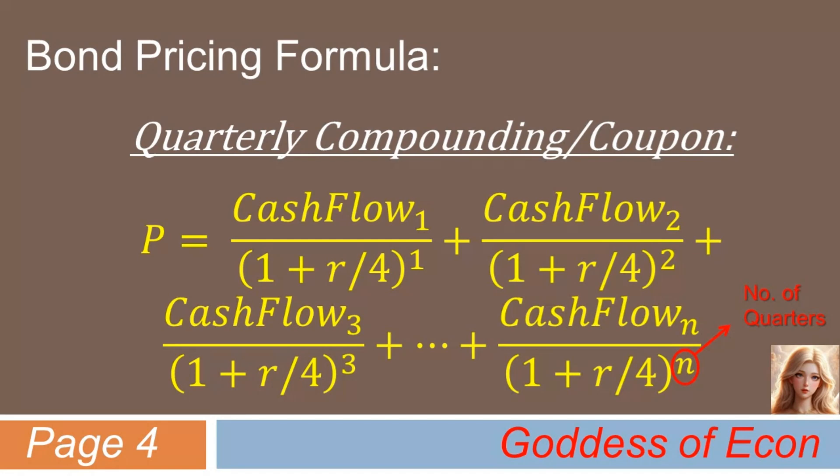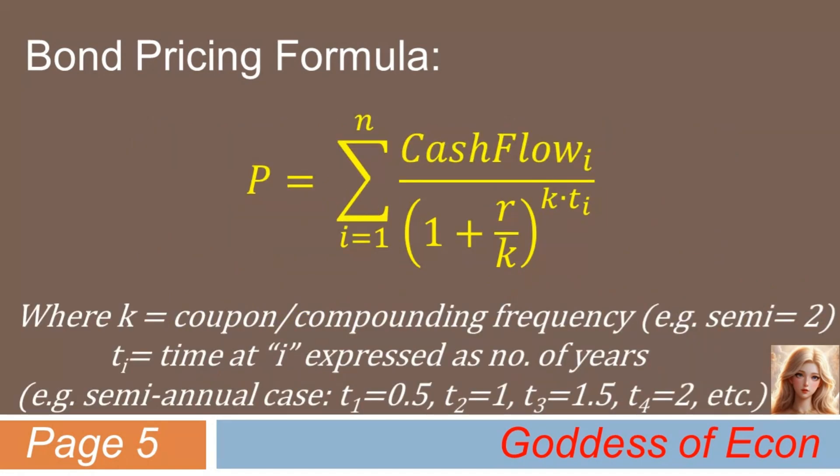So, how can we generalize these results? Well, it's not too difficult. The generalized formula is shown in the next slide. It doesn't look too scary, does it? Here, k represents coupon and compounding frequency. For example, in the semi-annual case, k equals 2, while in the quarterly case, k equals 4.